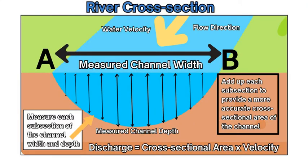For a more scientific, precise, and accurate measurement of the cross-sectional area, you take an exact channel width between two points A and B on either side. For depth, rather than an average, you take the entire profile of the channel and divide it into subdivisions or subsections to get a more accurate area of each individual subdivision, then add those up to get the cumulative depth of the whole channel, giving you a more accurate cross-sectional area.